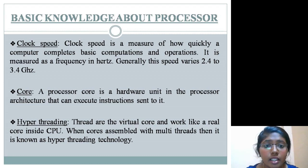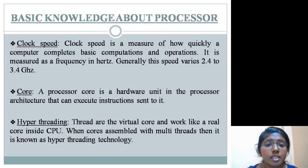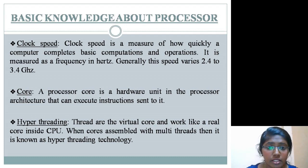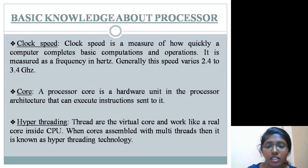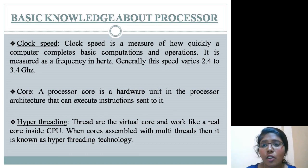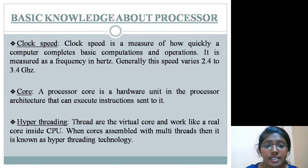Every time an operation is performed on a computer, such as when a file is changed or an application is opened, the processor must interpret the operating system or software's instructions. Depending on its capabilities, processing operations can be quicker or slower, having a big impact on the processing speed. Each processor is constituted of one or more individual processing units called cores. Each core processes instructions from a single computing task at a certain speed, defined as the clock speed, measured in GHz.